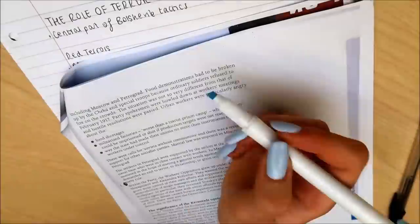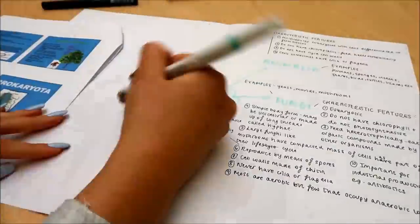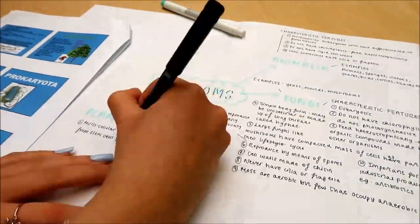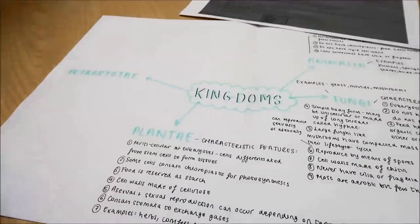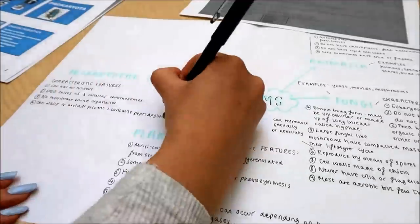Here I was just getting on with my history notes again, and now I'm doing a mind map for biology. This is just for the five different kingdoms. I'm writing down their characteristics and examples of all of them.